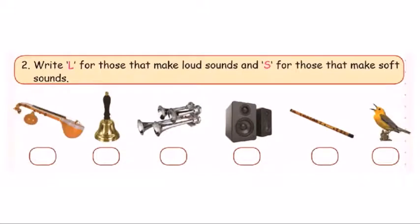The second exercise: write L for those that make loud sounds and S for those that make soft sounds. The first instrument is Veena — Veena makes a soft and mild sound, so we write S. A bell makes a loud sound, so we write L.